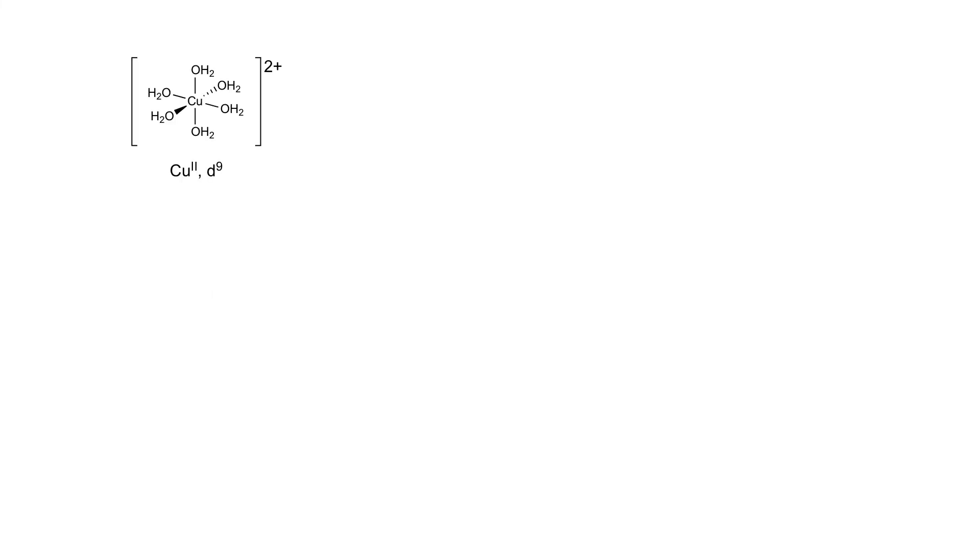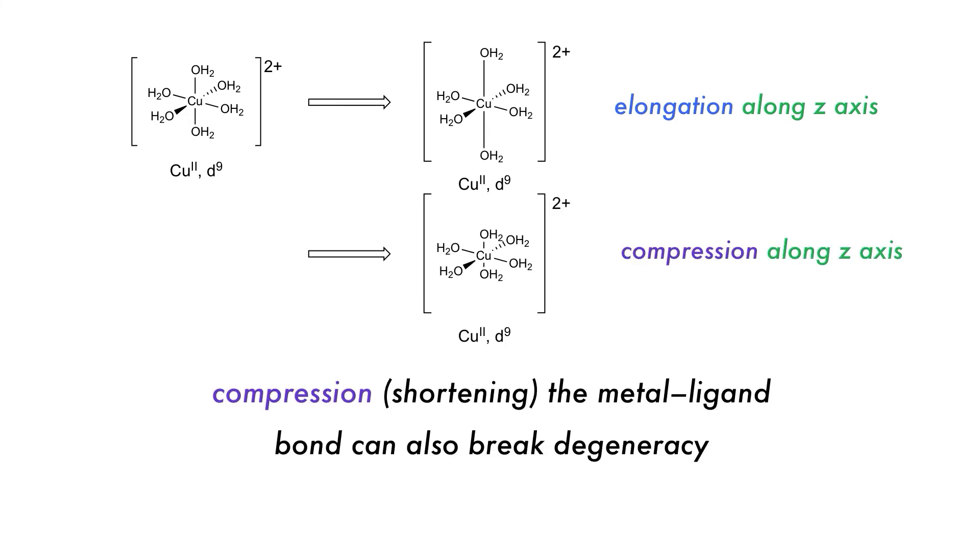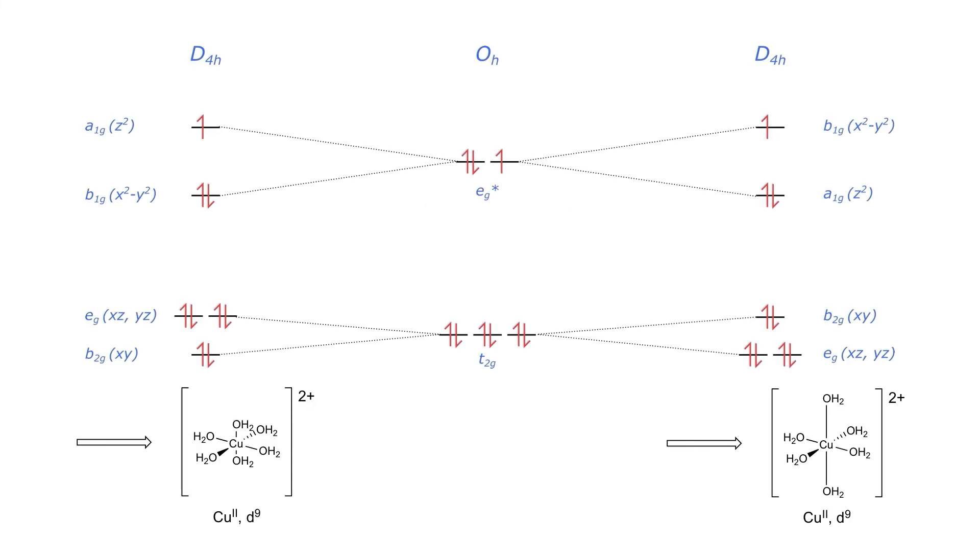For our copper II example, initially only elongation was considered to break the degeneracy, but compression along one of the axes would also break the degeneracy. Both compression and elongation can satisfy the need to break degeneracy, but the Jahn-Teller theorem cannot predict which will happen to a distorting complex, though for copper II elongation is more common.